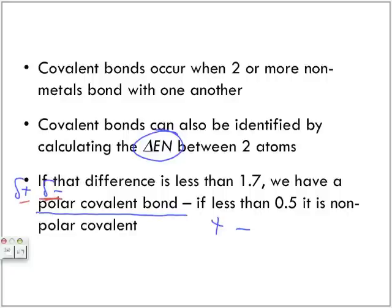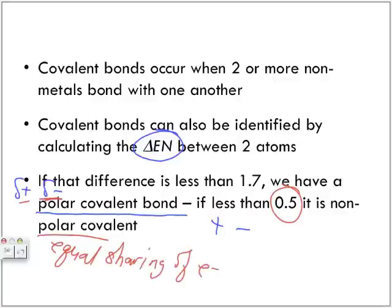The atom that is partially negative is the one with the higher electronegativity number, which means the other must be slightly positive. But if the electronegativity difference is between 0 and 0.5, we're looking at nonpolar covalent, which means there is an equal sharing of electrons. That small difference is considered negligible, so we treat it as nonpolar covalent.